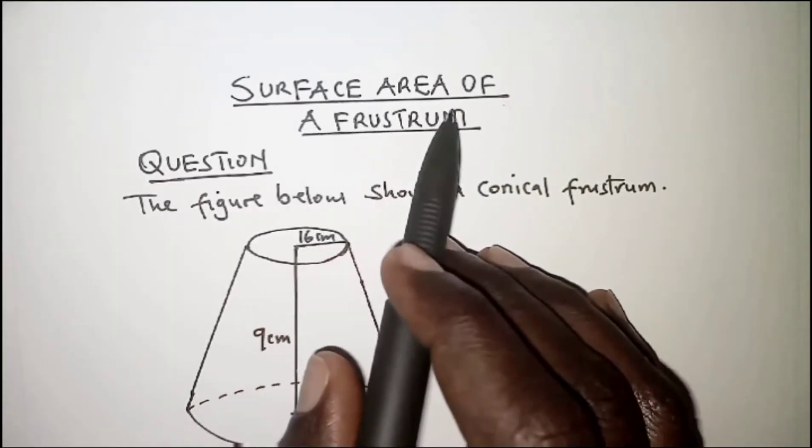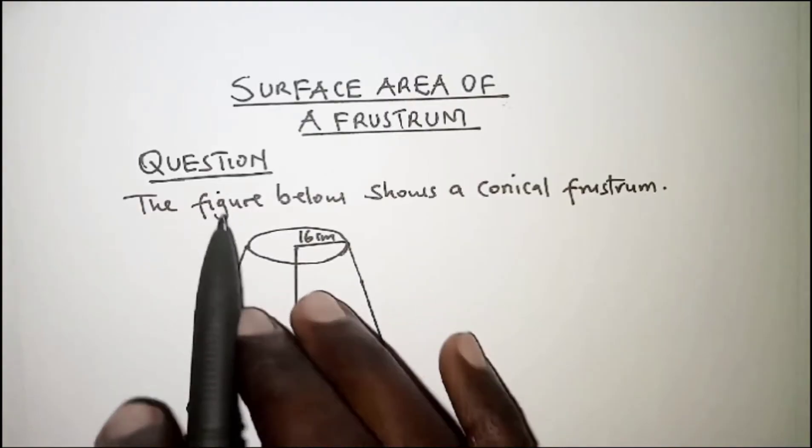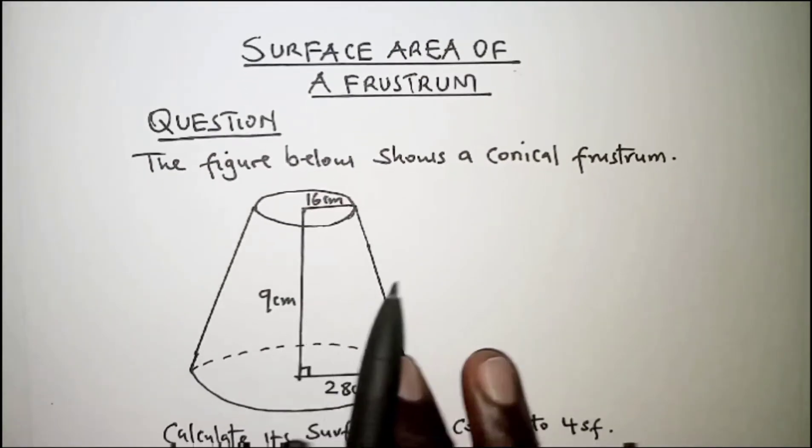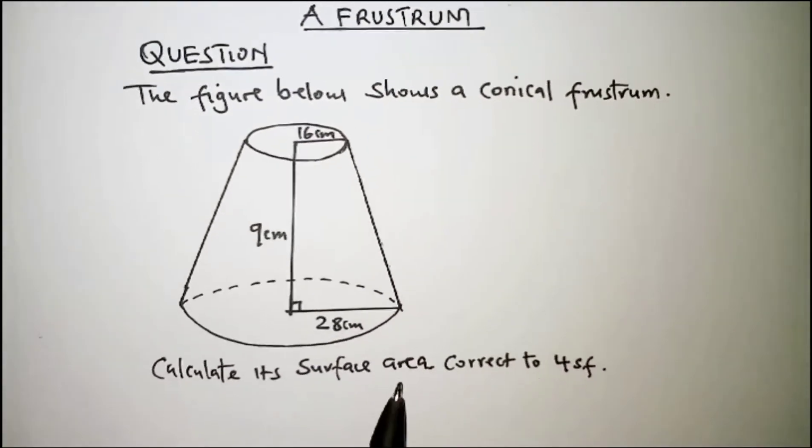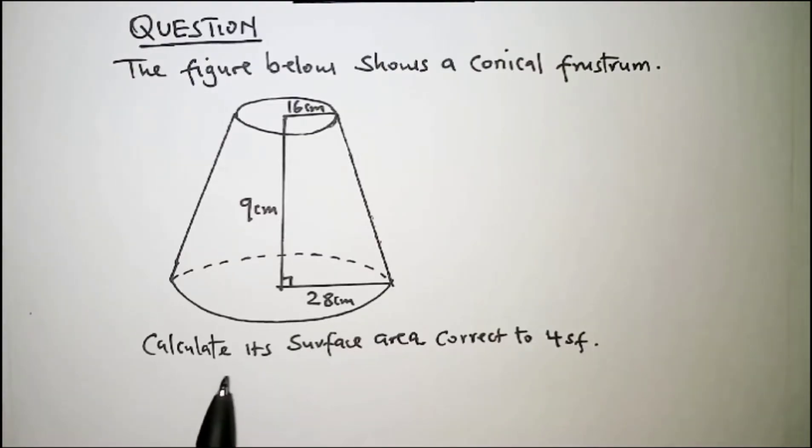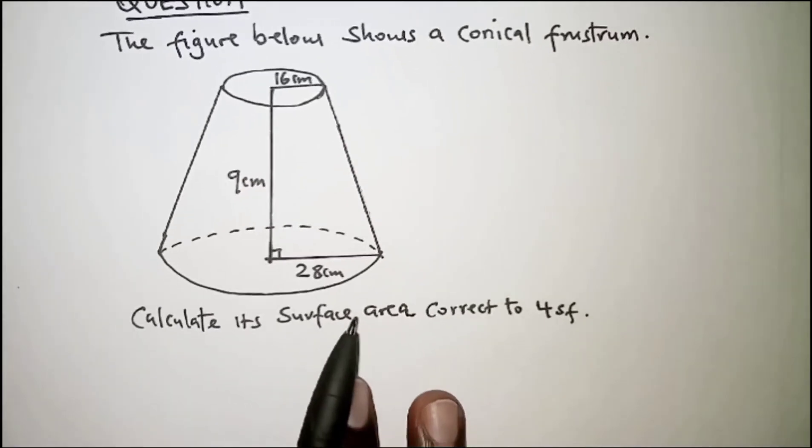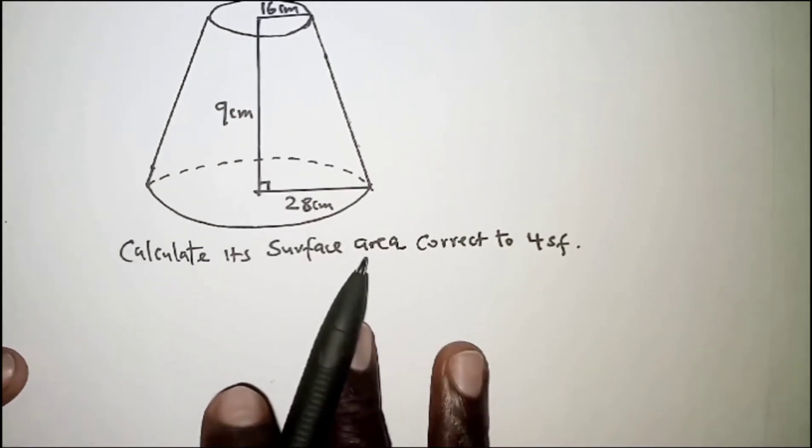The topic today is surface area of a frustum. The question reads: the figure below shows a conical frustum. Calculate its surface area correct to four significant figures. So we are going to begin by getting the area of the curved surface.